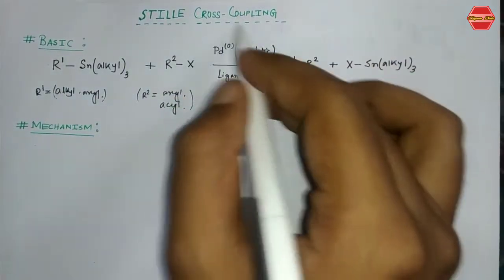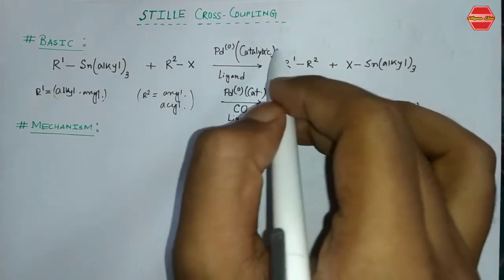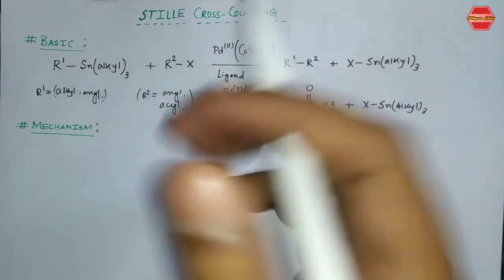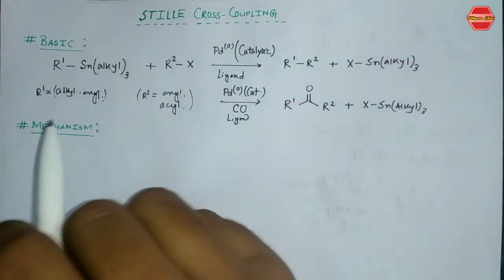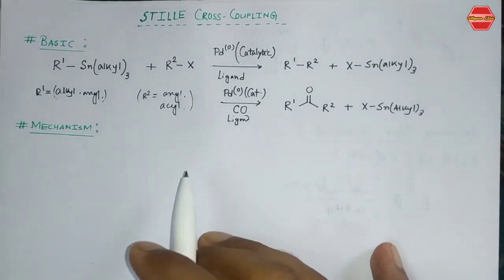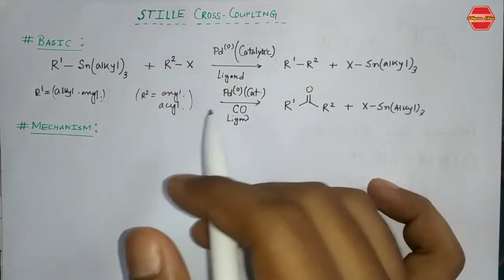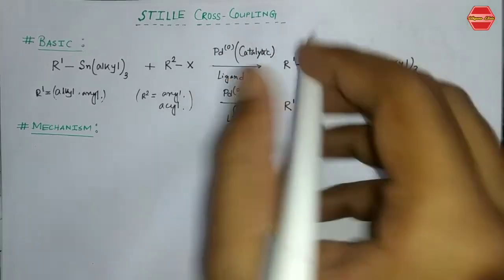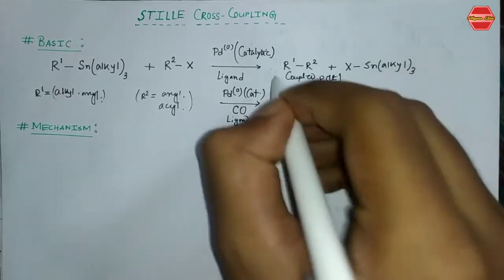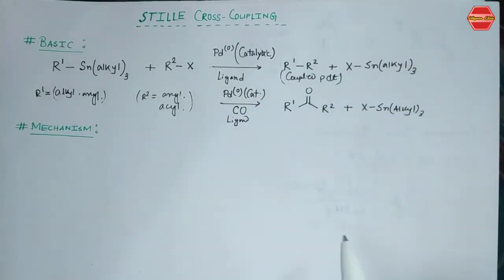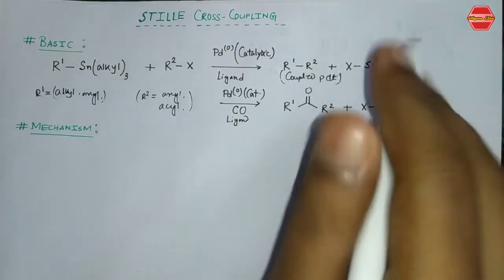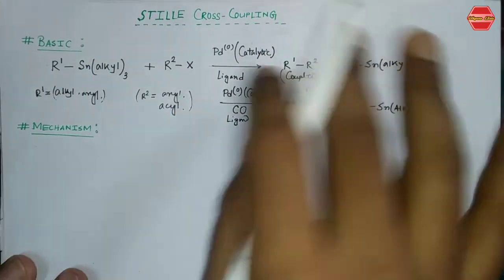We use palladium(0) as a catalytic amount along with ligands — PPh3-type ligands are used in this reaction. Palladium in the zero oxidation state is the catalytic amount that catalyzes the reaction cycle. We are going to get a coupled product, which is a carbon-carbon bond formation reaction. The X and the organotin leave from the system as the byproduct.